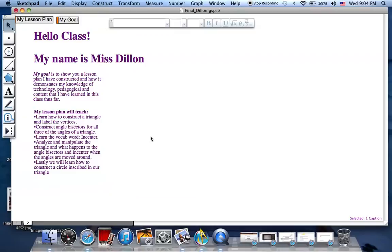My lesson plan is going to go over the construction of a triangle and also I will teach them what the vertices are and we'll learn how to label the vertices. We'll construct each angle bisector for all three angles in that triangle. I'll also go over the definition of what an angle bisector is.